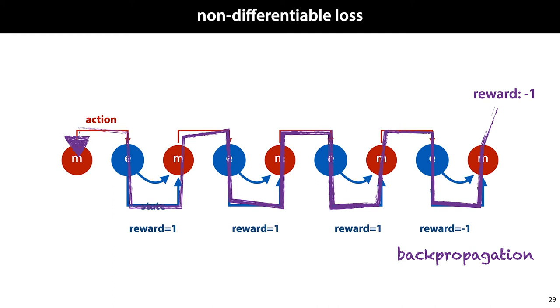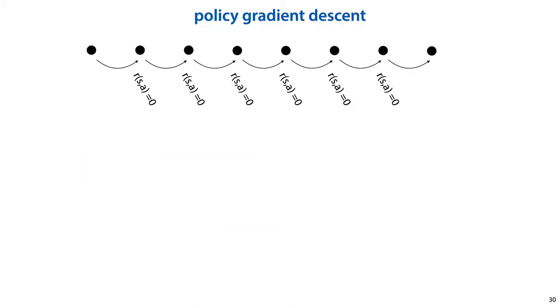As we noted in the previous video, we cannot backpropagate through the whole of this unrolled computation graph, but for parts of it we can. From the output of the network back to the input, we can apply backpropagation. Policy gradient descent is a simple method that allows us to estimate a gradient for the parts of our computation where we cannot compute the gradient explicitly. And it's a very simple idea.